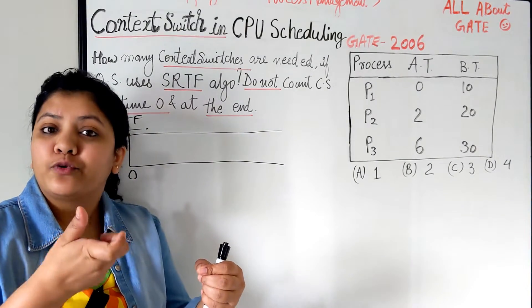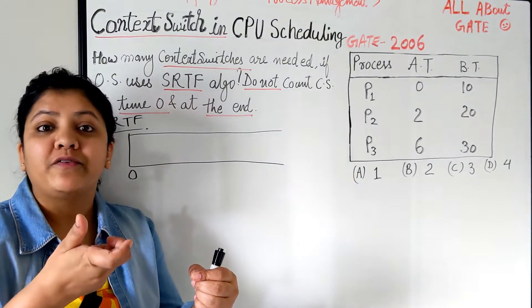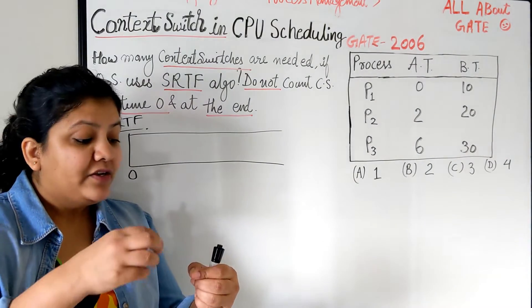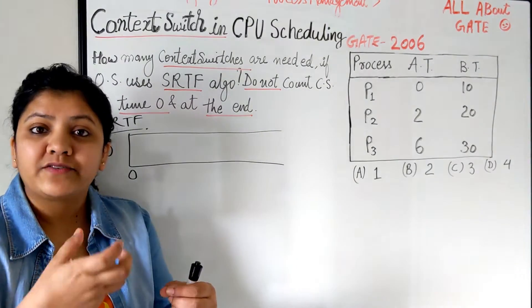PCB - process control block. This context switch of a process. The context of a process. That's why context switch, because we are switching the context of two processes. One is getting saved and another is getting loaded.